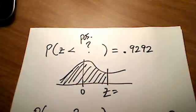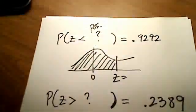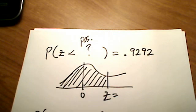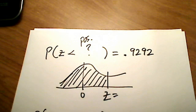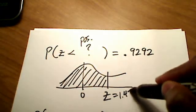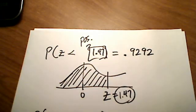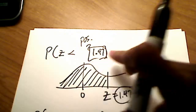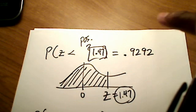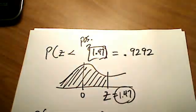So I'm going to go to my table, this time looking for a positive z-score — all shaded to the left. The z-number that corresponds to .9292 comes out to be 1.47. That's a positive 1.47, and I'll stick that in as my answer. So I can play the game backwards: instead of giving you the z and asking for the area shaded to the left, I give you the area and ask what's the z.